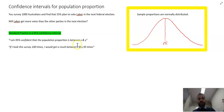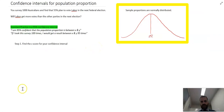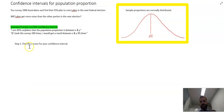That's when you might get an upset victory, because the result was outside the confidence interval. So, step one: find the Z score for your confidence interval.